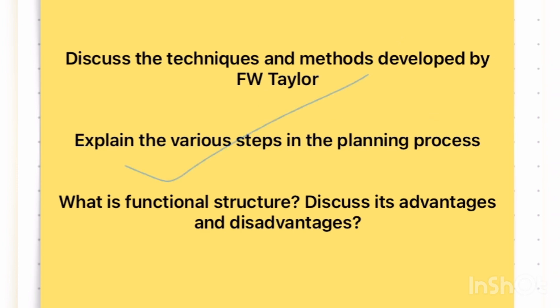There are various steps in the planning process: objectives set, planning premises, alternatives set, evaluate the best, select, implement. In the planning process, there are various steps that are very important.